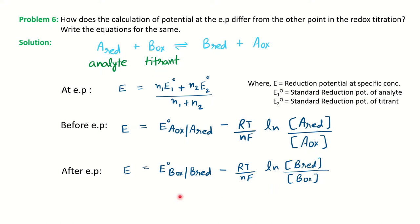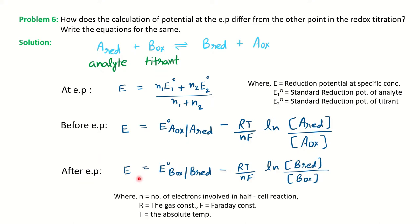So you can calculate the potential at equivalence point, before equivalence point, and after equivalence point. In these equations, R is the gas constant, F is the Faraday constant, T is the absolute temperature, and n is the number of electrons in the half-cell reaction. If you are unsure how to write the half-cell reaction, you can watch the previous video on redox titration — the link will be shared — and then you will be able to write half-cell reactions and solve the problems.